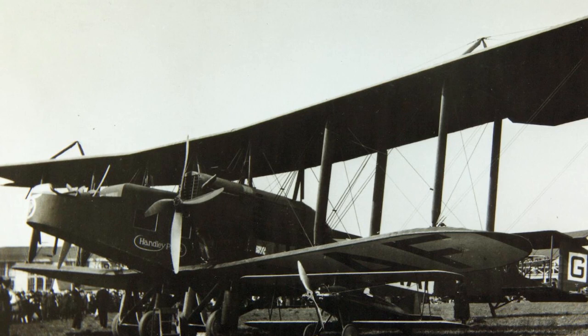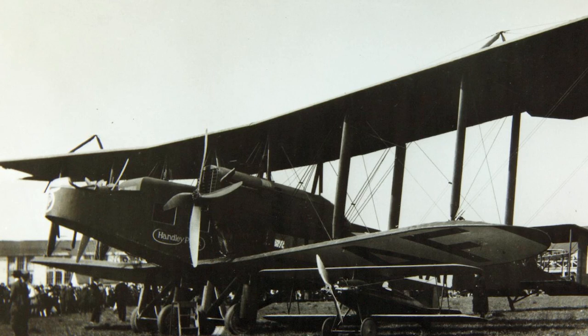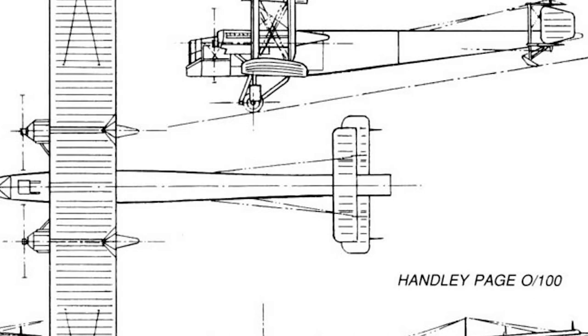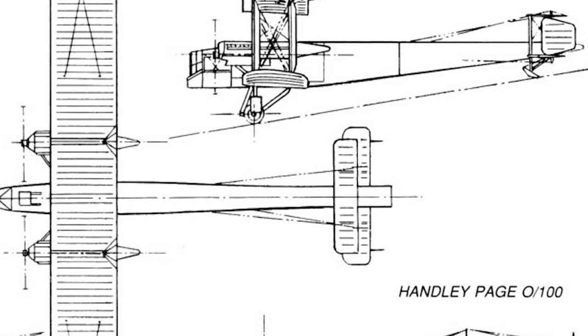In the spring of 1917, a more refined version — the O/400 — was introduced. The O/400 was Britain's first strategic bomber and for many months the largest aircraft assembled in the British Isles. It carried out successful missions throughout Germany and was also the platform for the greatest Allied bombing raids of the war.